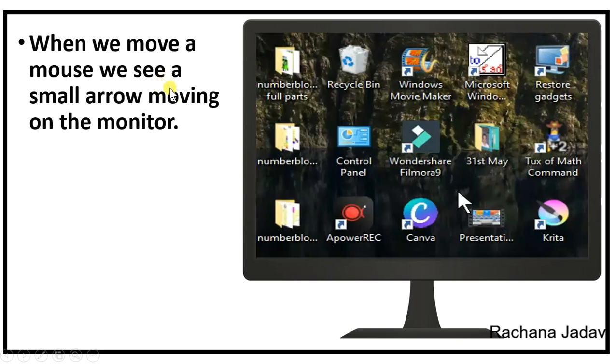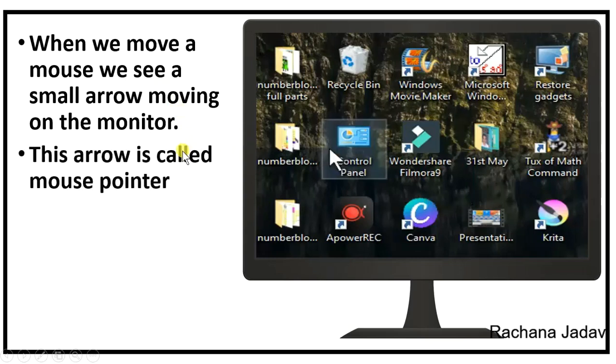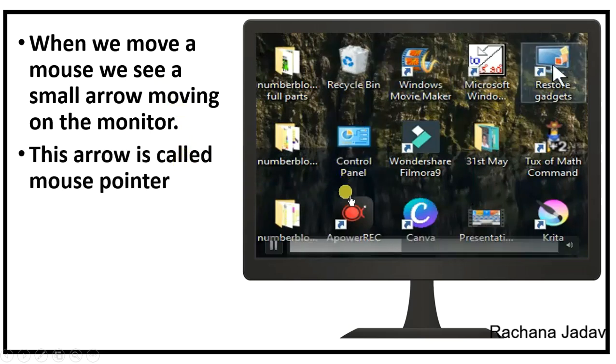Now we also have, when we move a mouse, we see a small arrow moving on a pointer. That is an arrow which is known as mouse pointer.